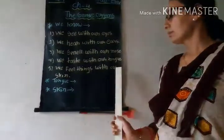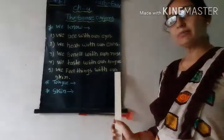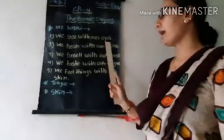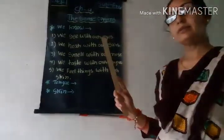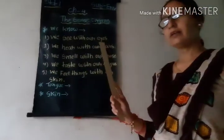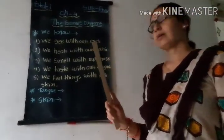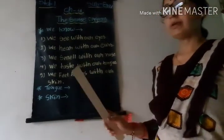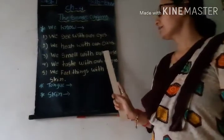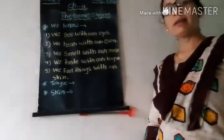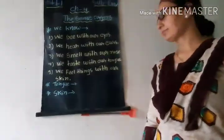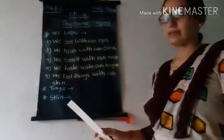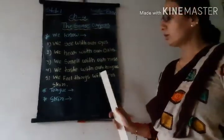These are the most important parts of our body. Eyes — we see with our eyes. Eyes, ears, nose — we see something around us. Today we have learned about tongue and skin. Tongue and skin.